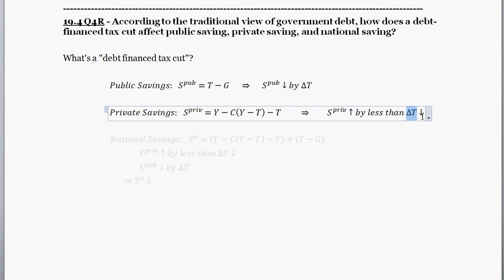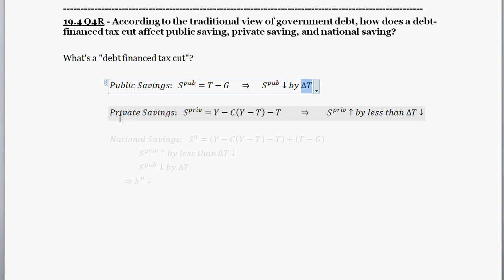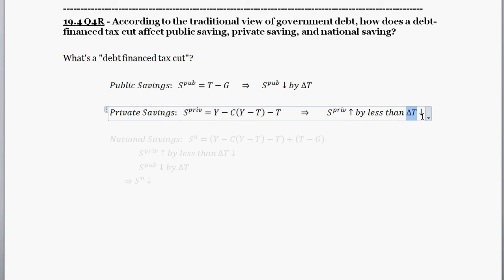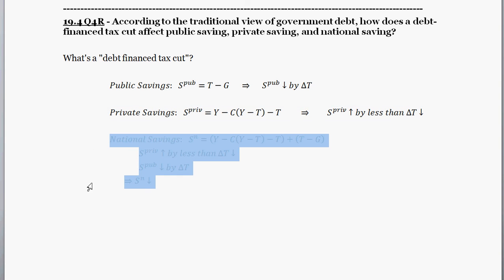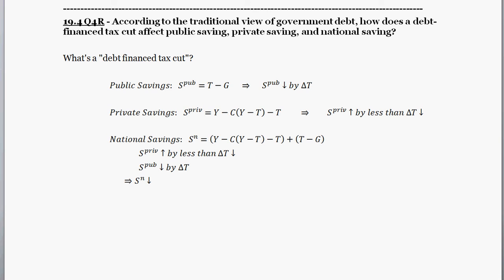To summarize: public savings definitely went down by the change in taxes. Private savings have gone up, but by some amount smaller than the change in taxes — that amount is defined by the marginal propensity to consume. When we combine the two effects, since national savings equals private savings plus public savings, public savings decreases by the change in taxes and private savings increases by less than the tax cut — so national savings is going to decrease. That's the traditional view.